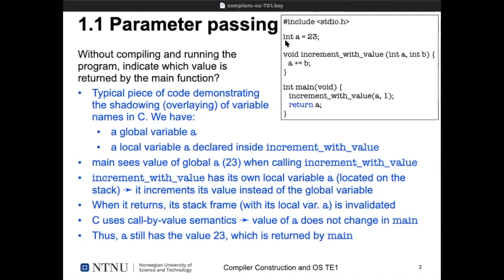We have a variable `a` at the top initialized to 23, and another variable `a` which is the parameter to `increment_with_value`. These have the same name but are different variables. Main has no local declaration of a variable called `a`, which means main only sees the global variable `a`, initialized to 23 before the program starts.